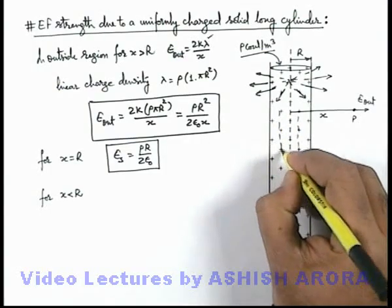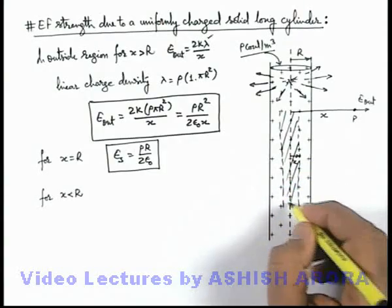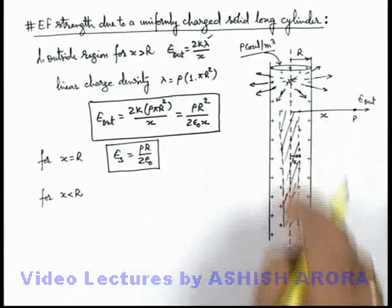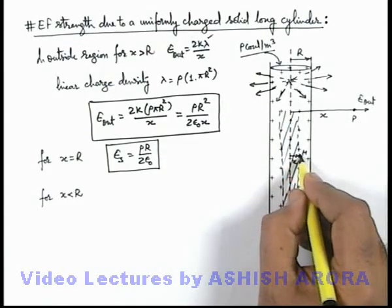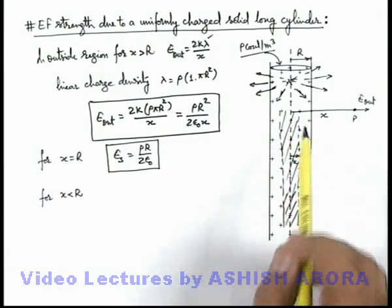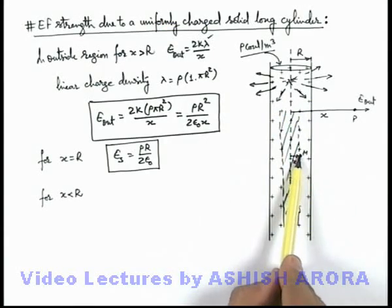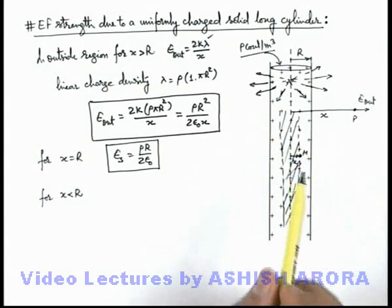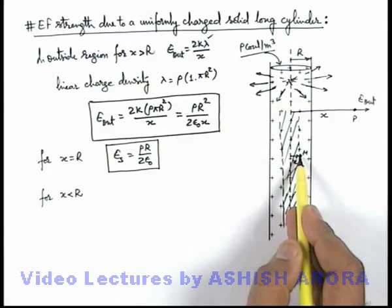One is the inner cylinder which is of radius x, which you can see here I am just differentiating it by the shaded region. At this point M electric field will exist only due to this inner cylinder of radius x, as this point M is the interior point of this outer shell which is of inner radius x and outer radius R.